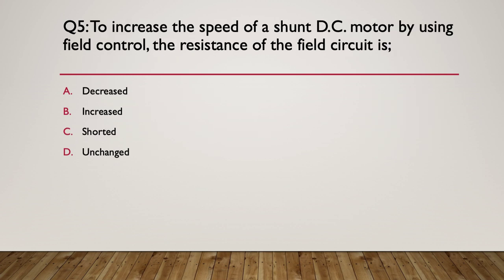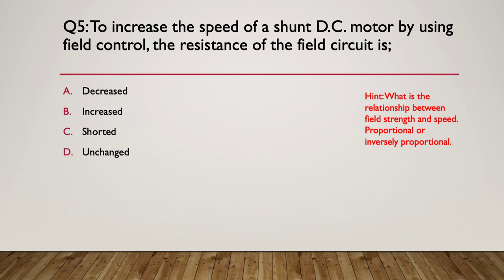Question five: to increase the speed of a shunt DC motor by using field control, the resistance of the field circuit is: A — decreased; B — increased; C — shorted; D — unchanged. Here's your hint: what is the relationship between field strength and speed? Think about proportional versus inversely proportional. The answer is B — increased. Increasing the resistance decreases the current, which reduces the magnetic field, which will increase the speed. So it's inversely proportional.